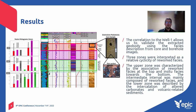As a final result, the correlation of the well log allows us to validate the structural geobodies using the facies description from core and borehole image. Three zones were interpreted as a relative cyclicity in each zone of these reworked facies: the red zone, the purple, and the green. The upper zone was characterized by the association of reworked facies at the top and in-situ facies toward the bottom. The intermediate interval was mainly composed of reworked facies, and the lower zone was described by the intercalation of altered carbonate and volcanic-related segments.